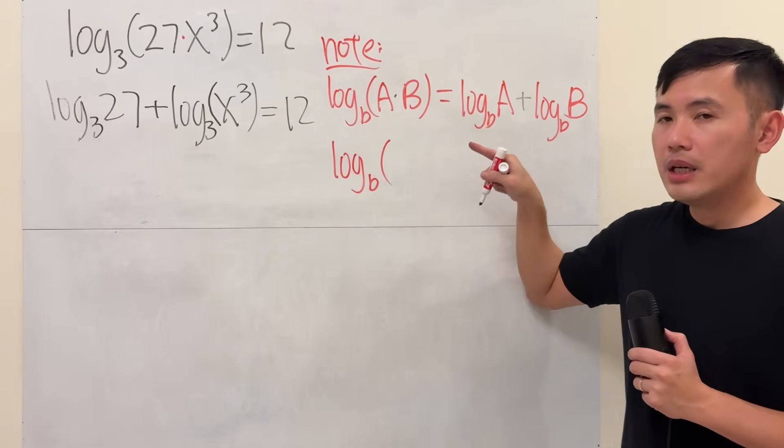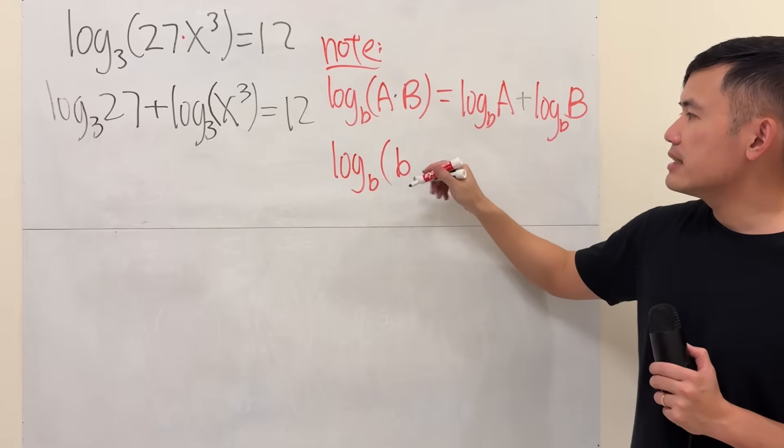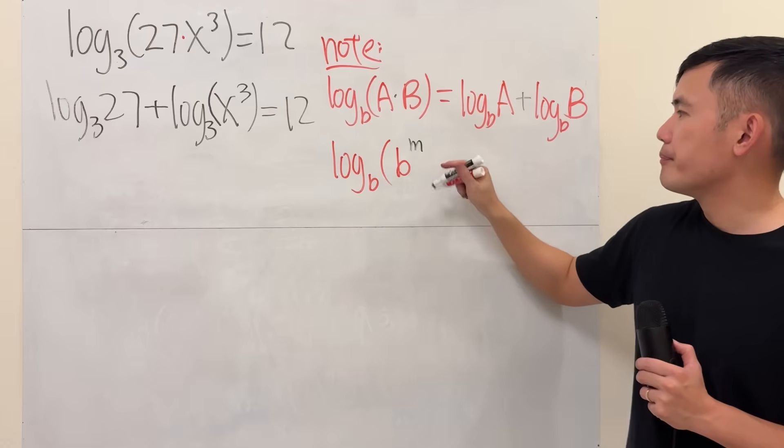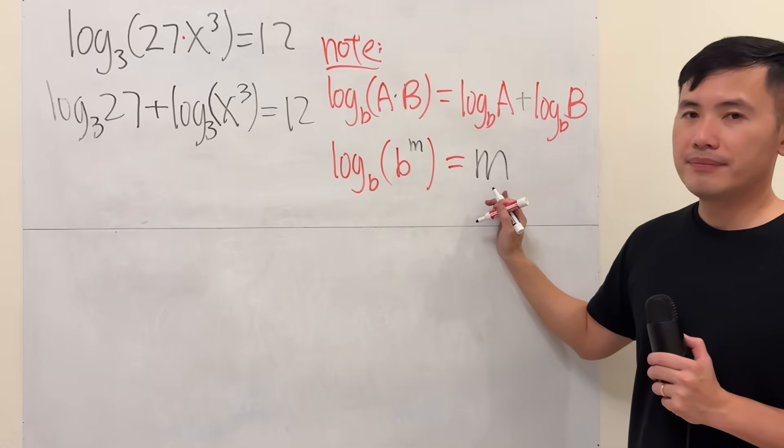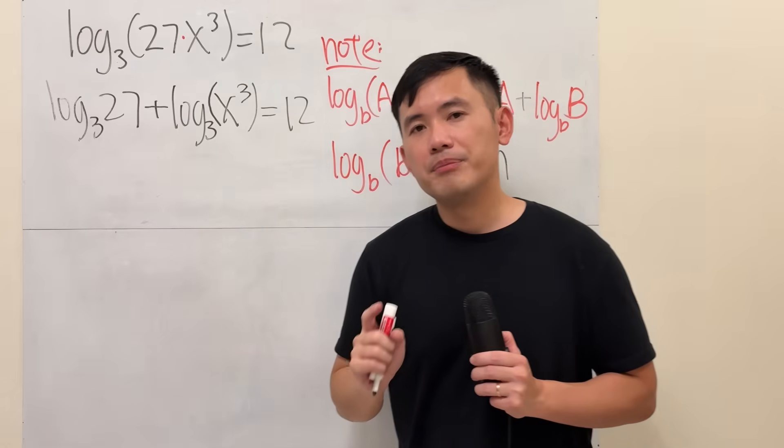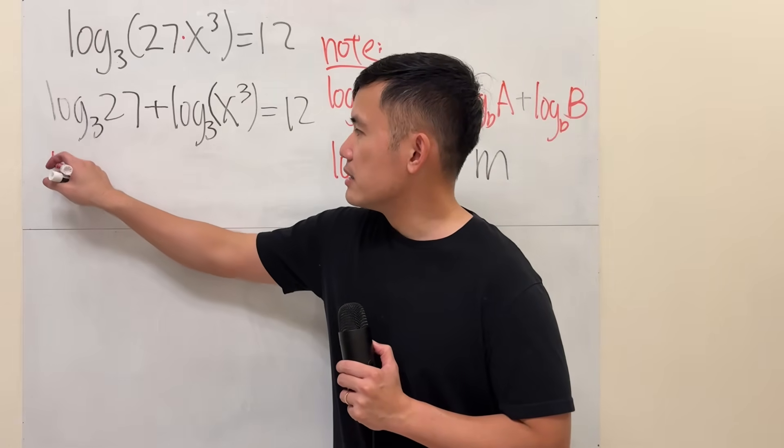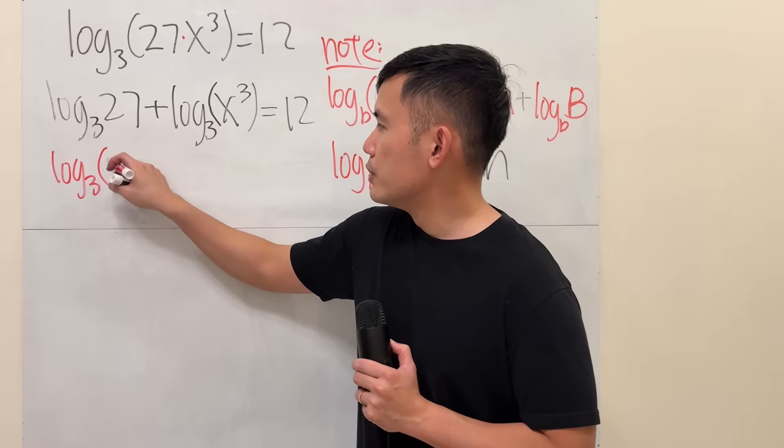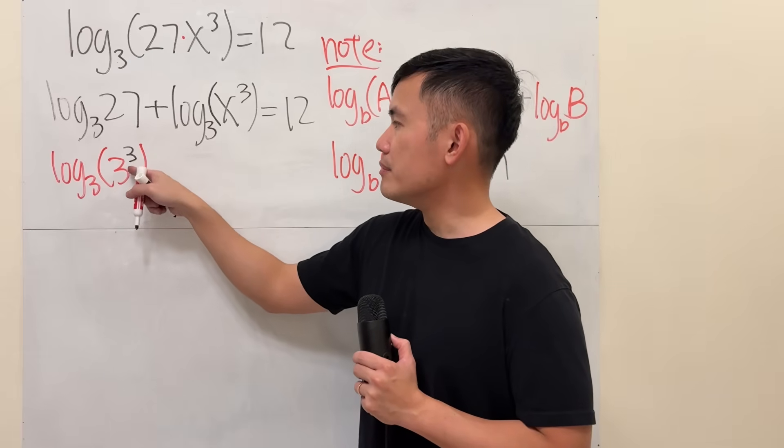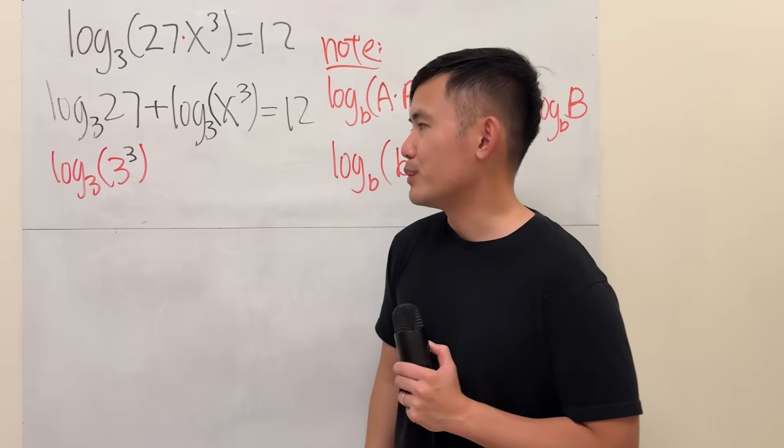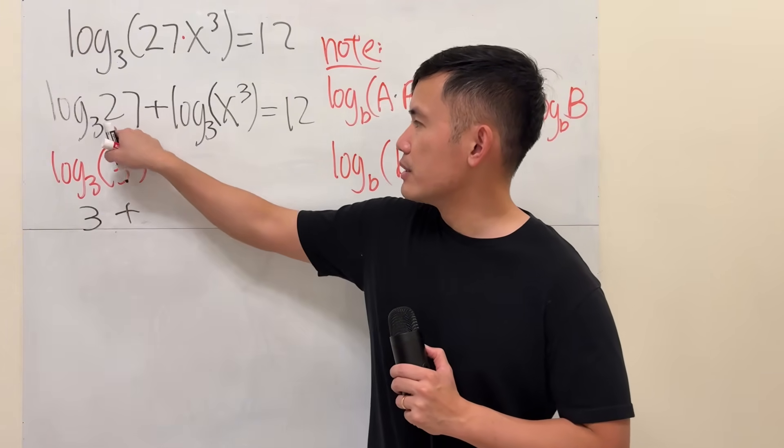Log base b. If the input happens to be the same base, b, and let's say we have some power here, m, they cancel. We just get the m back. Can we do that right here? Yes, because 27, it's the same as 3 to the 3rd power. So look at this as log base 3 of 3 to the 3rd power. Because they have two things, that's why I put down the parentheses. But anyways, they cancel. We just get a 3. So this is just 3.